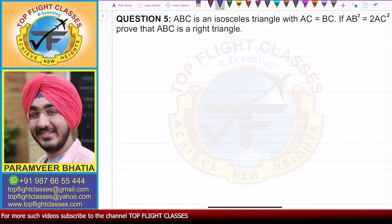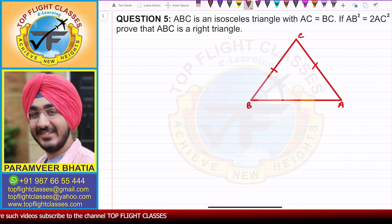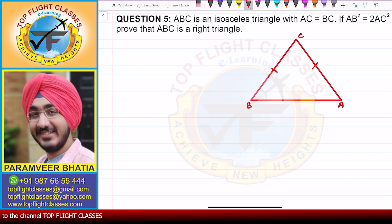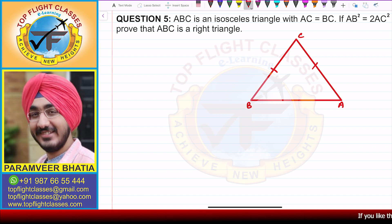Let's draw this question. This is the diagram — a triangle ABC in which we have AC equal to BC, because it is an isosceles triangle. And also, we have been given that AB square is equal to 2AC square.